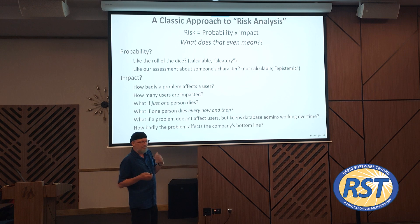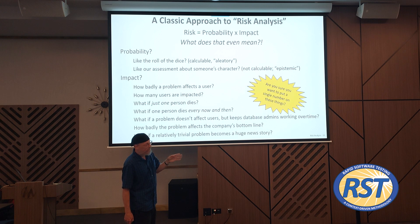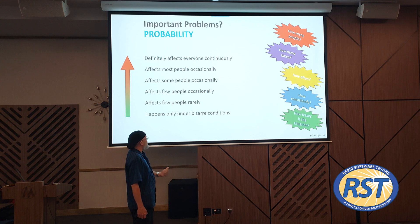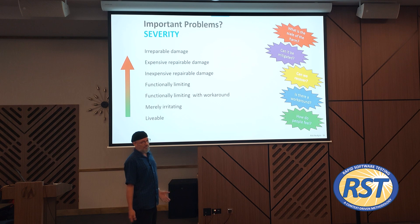Let's look at this more expansively and unpack the ideas about risk. Are you sure you want to put a single number on this? Look at all the dimensions of probability: maybe it affects everybody all the time, maybe it affects most people all the time, or maybe it affects some people only occasionally, a few people rarely, or only under exceptionally weird conditions.